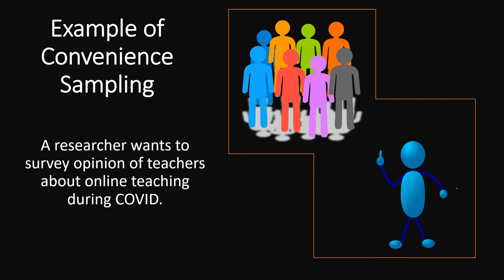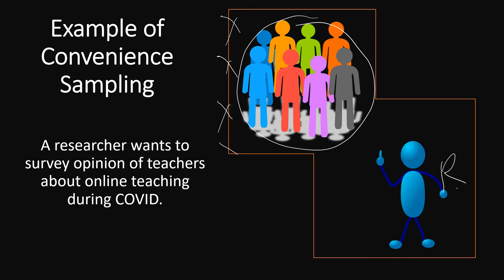In this example, this is the researcher and these are teachers close to the researcher. This orange boundary shows that these teachers are accessible to the researcher conveniently and easily. There are many drawbacks of convenience sampling.